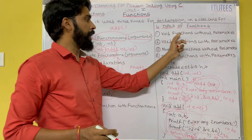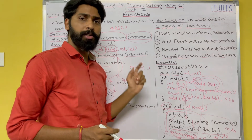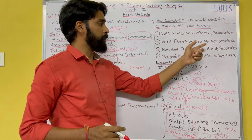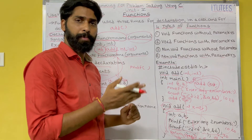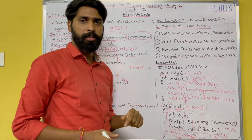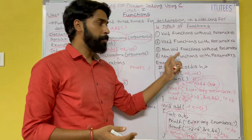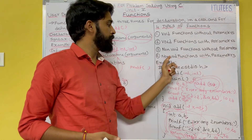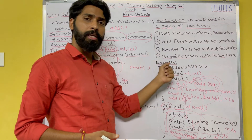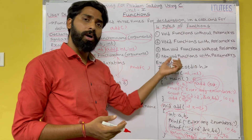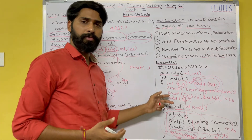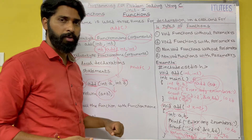To summarize the four types: void functions without parameters — no return type, no parameters. Void functions with parameters — no return type, only parameters. Non-void functions without parameters — returns a value but no arguments. Non-void functions with parameters — the function contains both return type and arguments. We will see the exact outputs when we execute these programs.